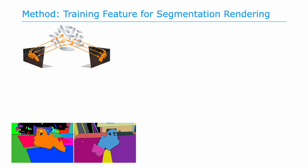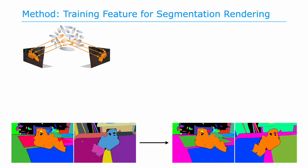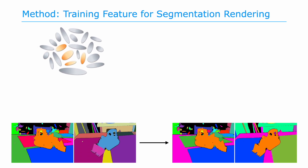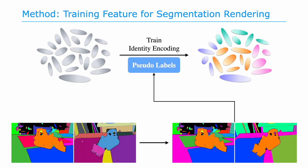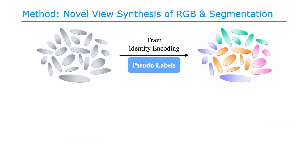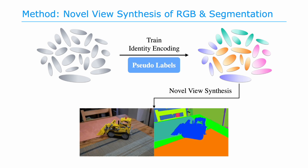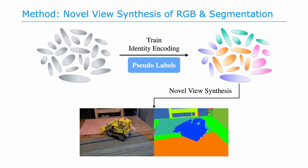After the mask association and group ID assigning process, masks projected by the same group of Gaussians are assigned the same group ID across different views. We use those associated masks as pseudo-labels to train a feature representing the group ID for segmentation rendering. Our segmentation-aware 3D Gaussians can then be readily used for novel view synthesis of both RGB and segmentation.